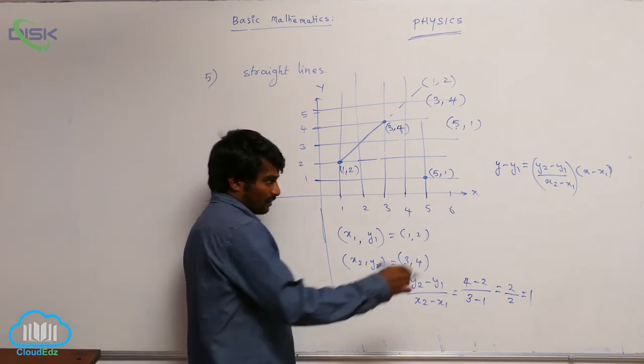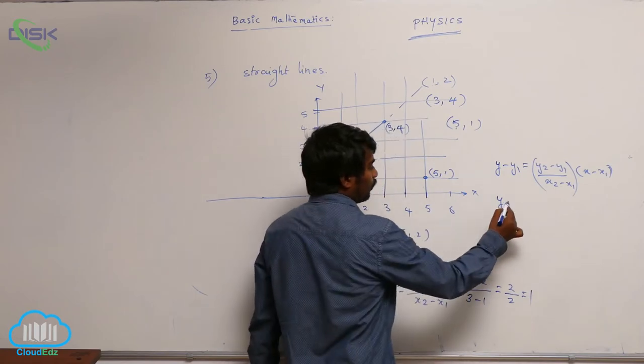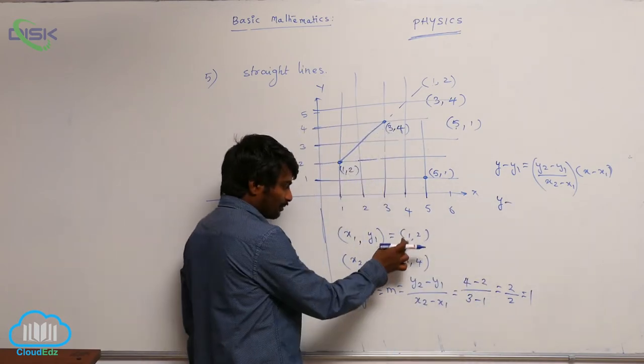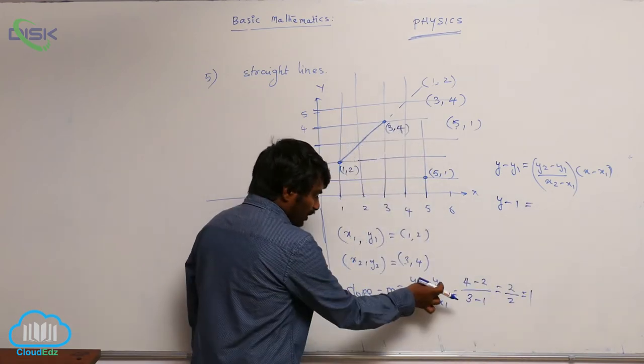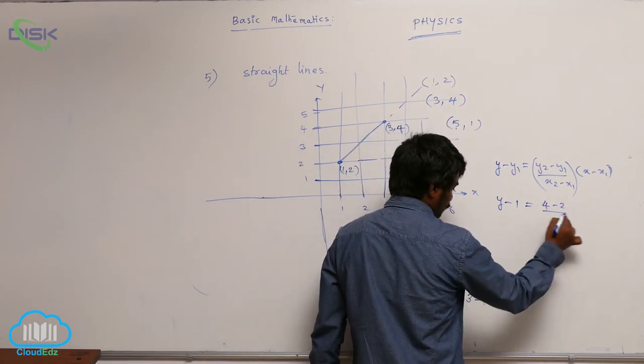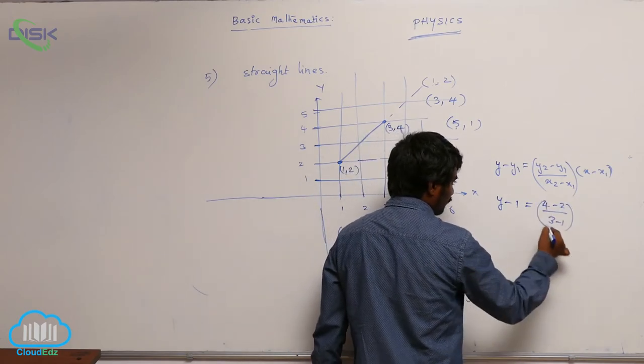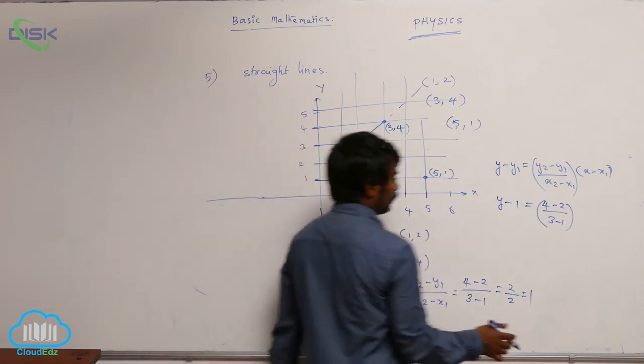Next, let us write: y is one variable, x is again variable. y minus, what is y1 here? y minus 1 is equal to (y2 minus y1) by (x2 minus x1) is this. So 4 minus 2 by 3 minus 1 into (x minus x1), x1 is 1.